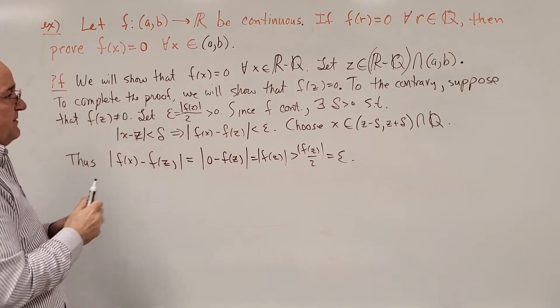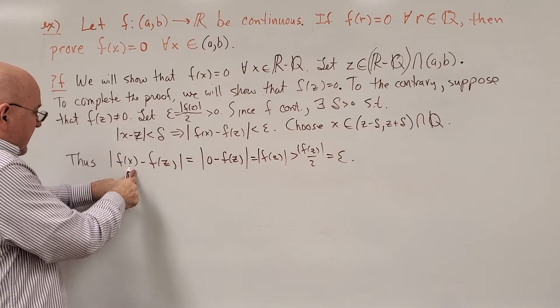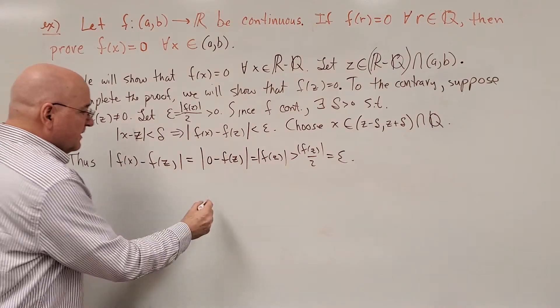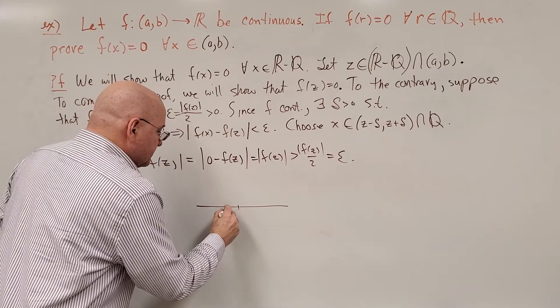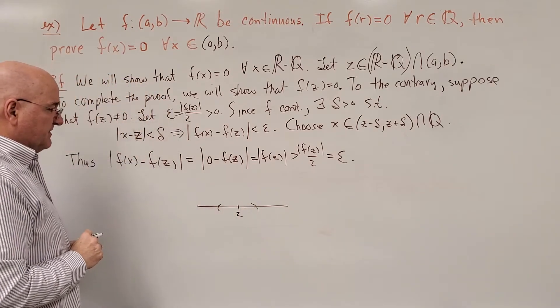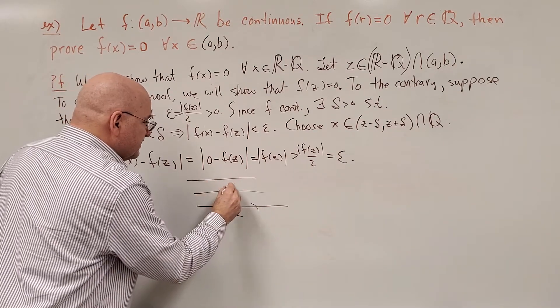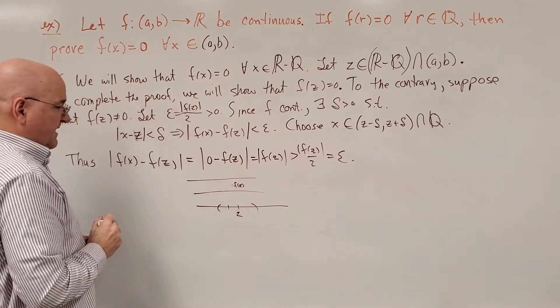It's a continuous function we assumed, yet we found an x in the interval between z plus and minus delta that was not close to f(z), that height f(z).